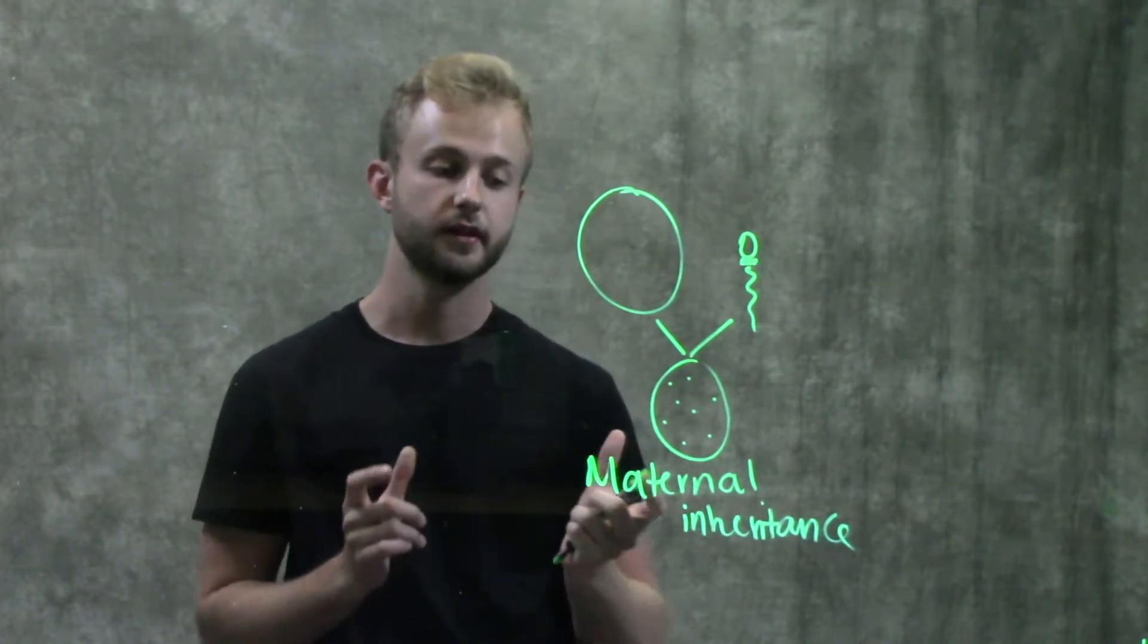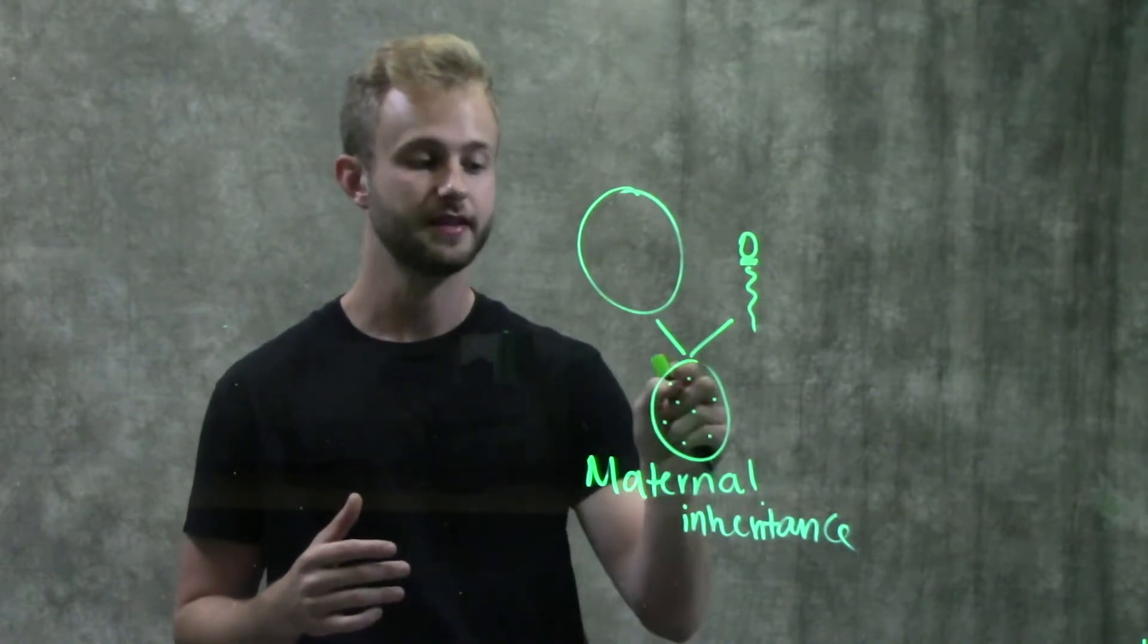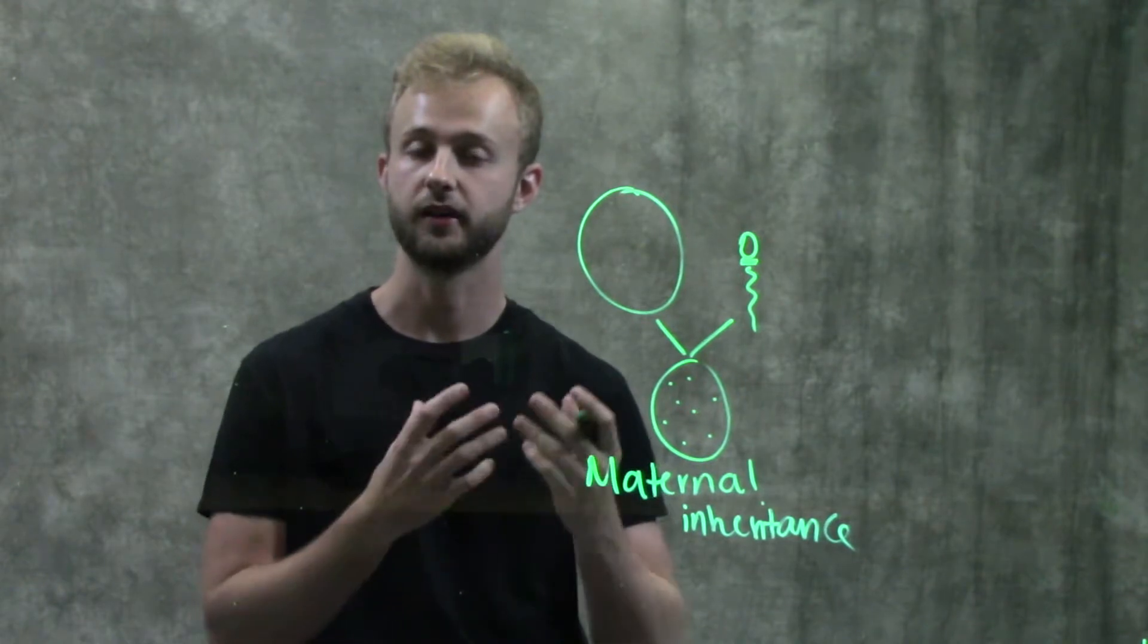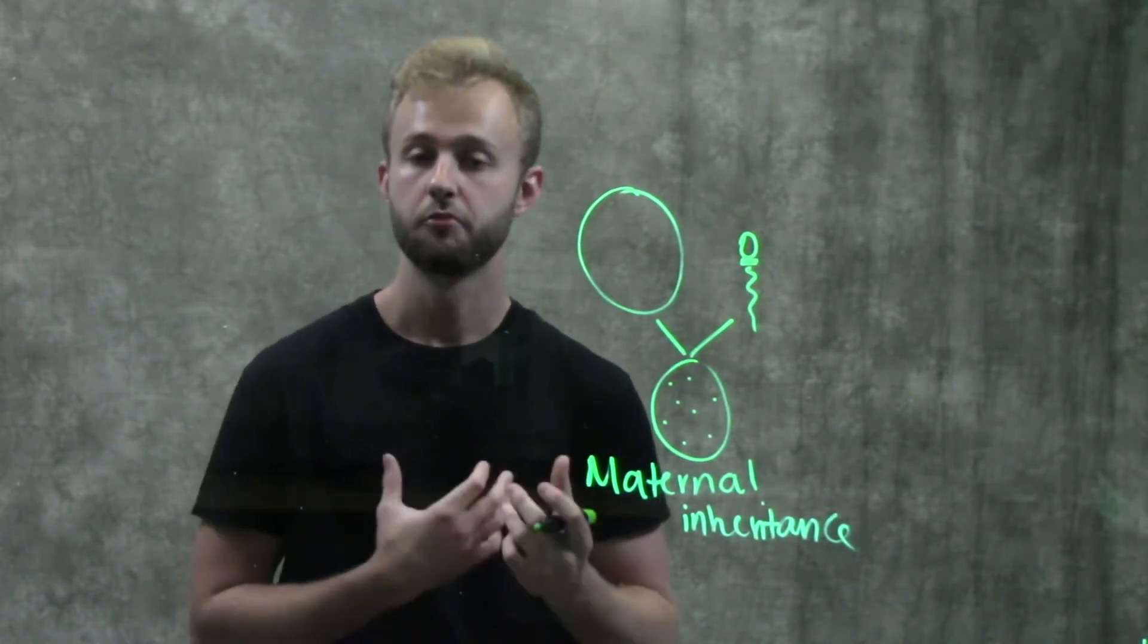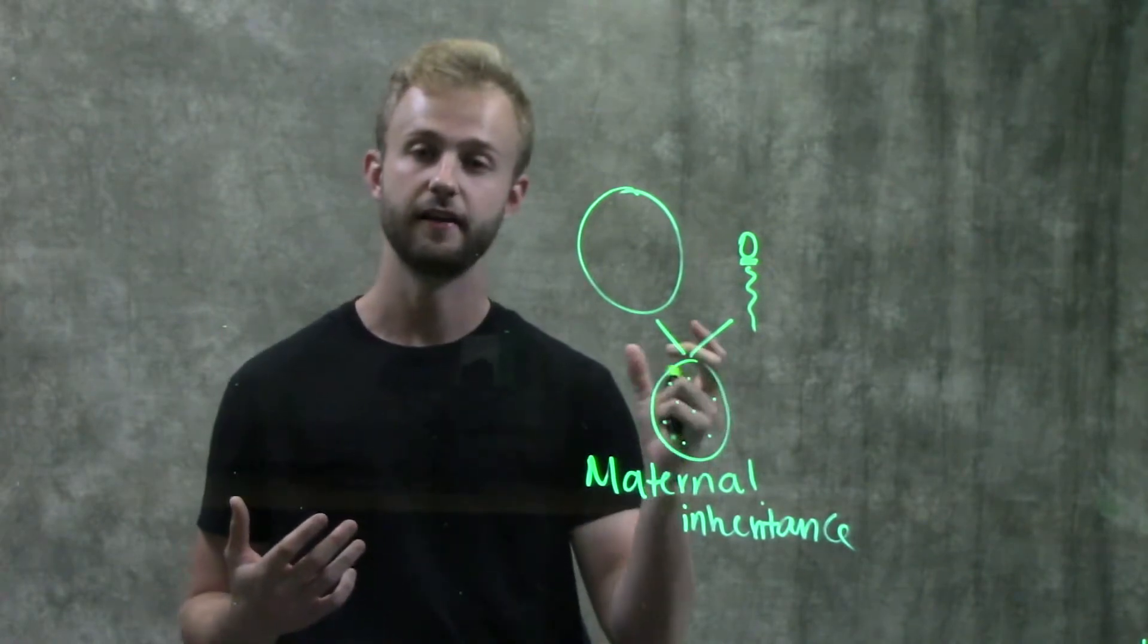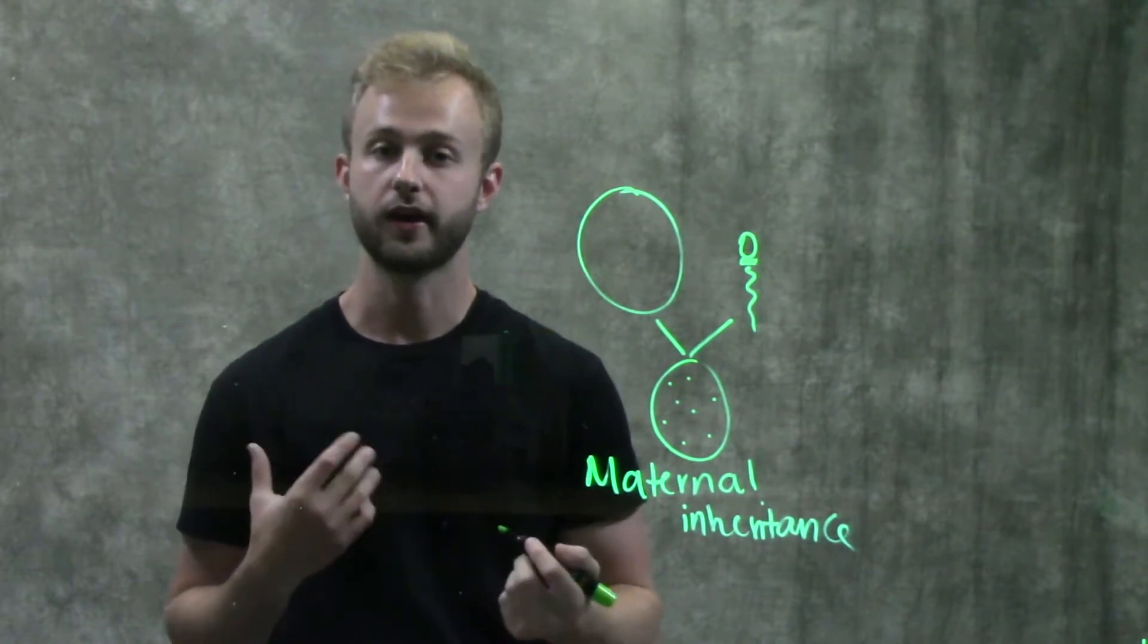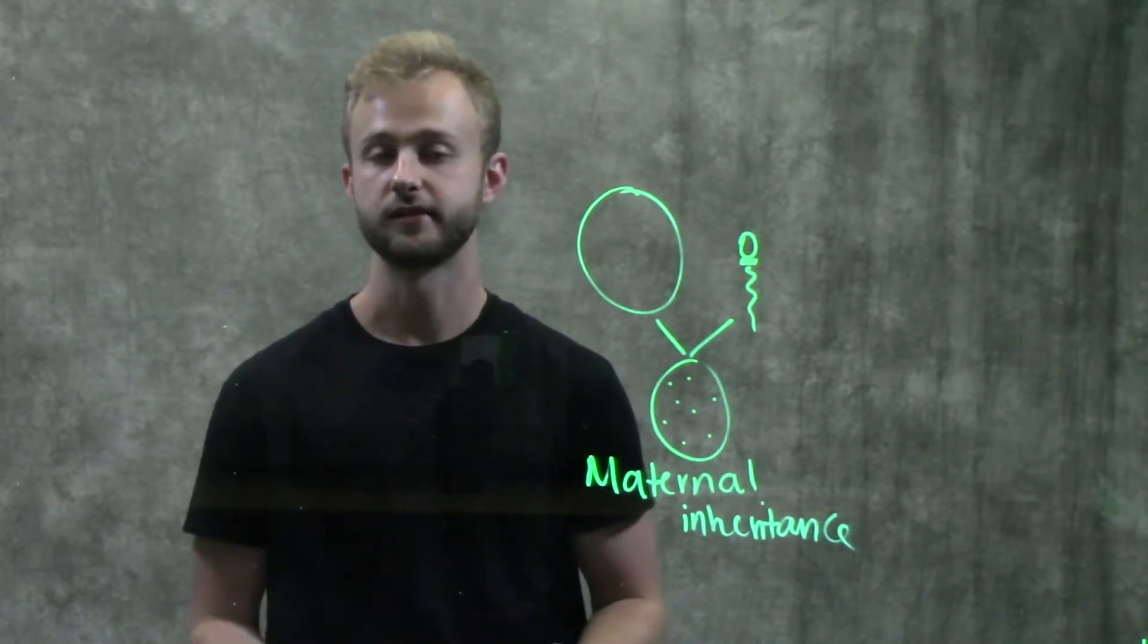Defects in mitochondrial genes can cause some disorders because these genes are important in aspects of the electron transport chain and ATP production. If we have mutations in those genes, it can cause a real problem for the individual carrying those mutations because they're not able to produce as much ATP as they should.